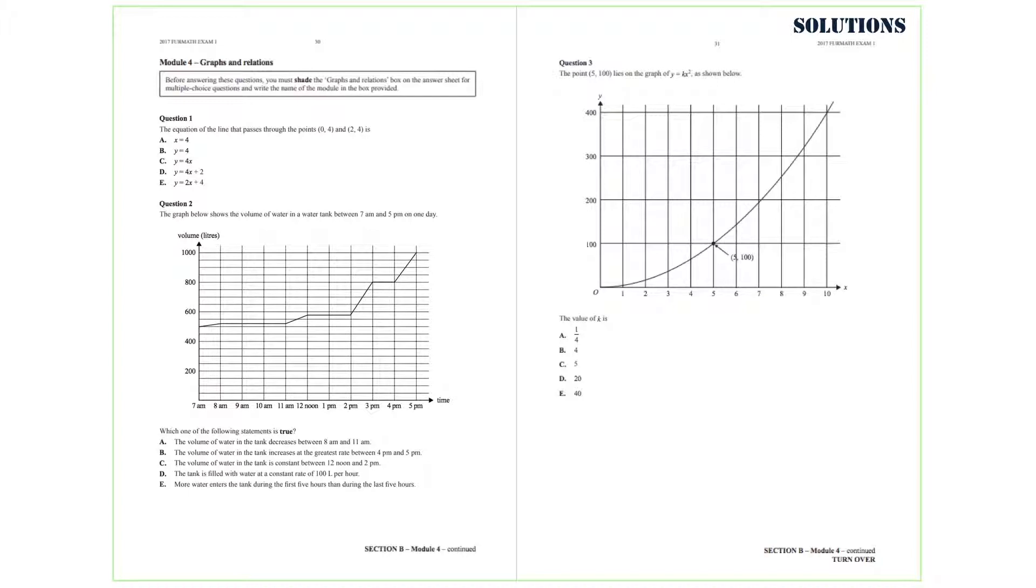Question 3. The point with coordinates 5 and 100 lies on the graph with equation y equals kx squared as shown below. So, the question is asking for the value of k. If we substitute the coordinates of this point into this equation, we calculate k as being equal to 4.